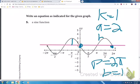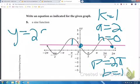And since we started at 0, there's no shifting, so h is 0. So the equation would be y equals 2 sine x plus 1.